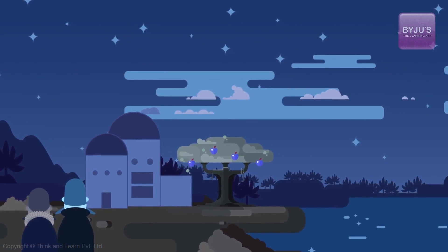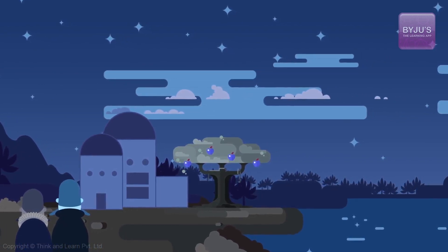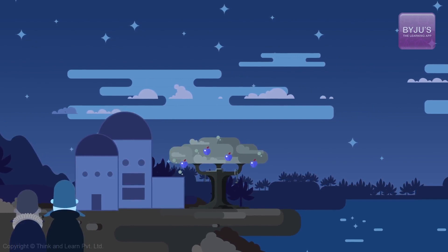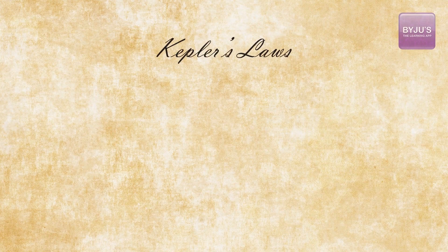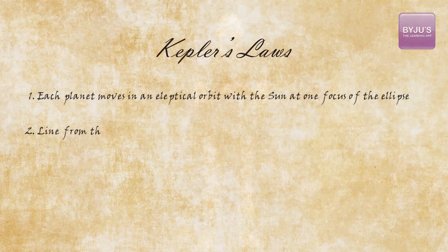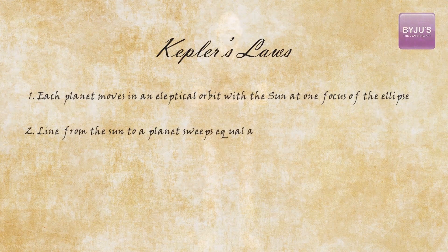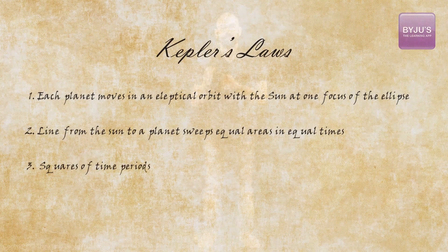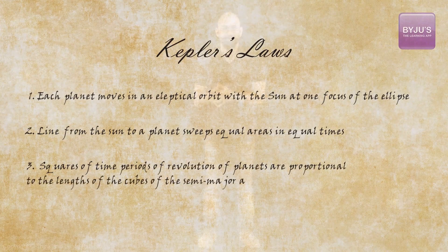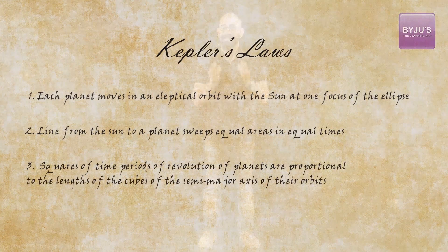Johannes Kepler, who was one of his contemporaries, went through this enormous amount of data and came up with a few interesting inferences — what we call Kepler's laws. Number one: he settled the debate by observing that each planet moves in an elliptical orbit, with the sun at one focus of the ellipse. Number two: a line from the sun to a planet sweeps equal areas in equal times. Number three: the squares of the time periods of revolution of planets are proportional to the cubes of the semi-major axis of their orbits. I'll explain these laws in detail, but for now let's continue with the story.